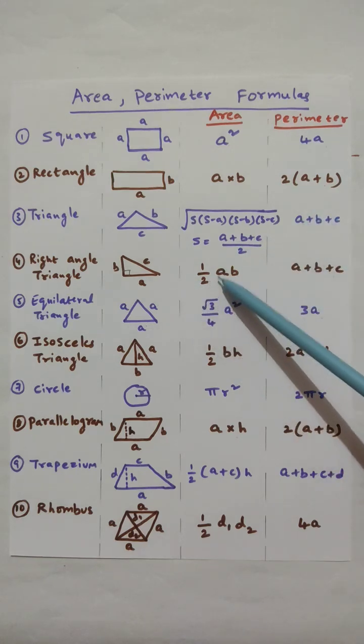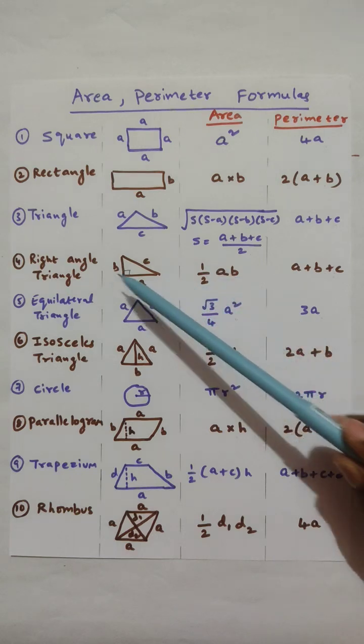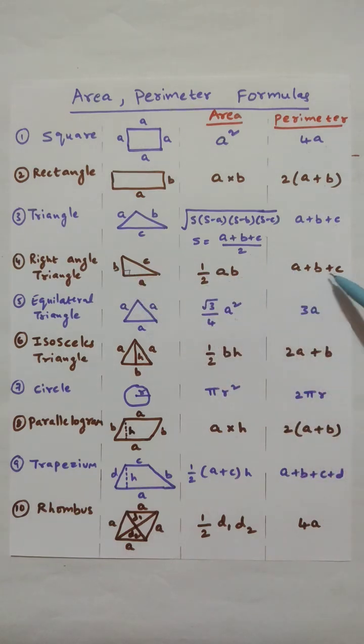Right angle triangle. Area is half base into height, half A into B. Perimeter is A plus B plus C.